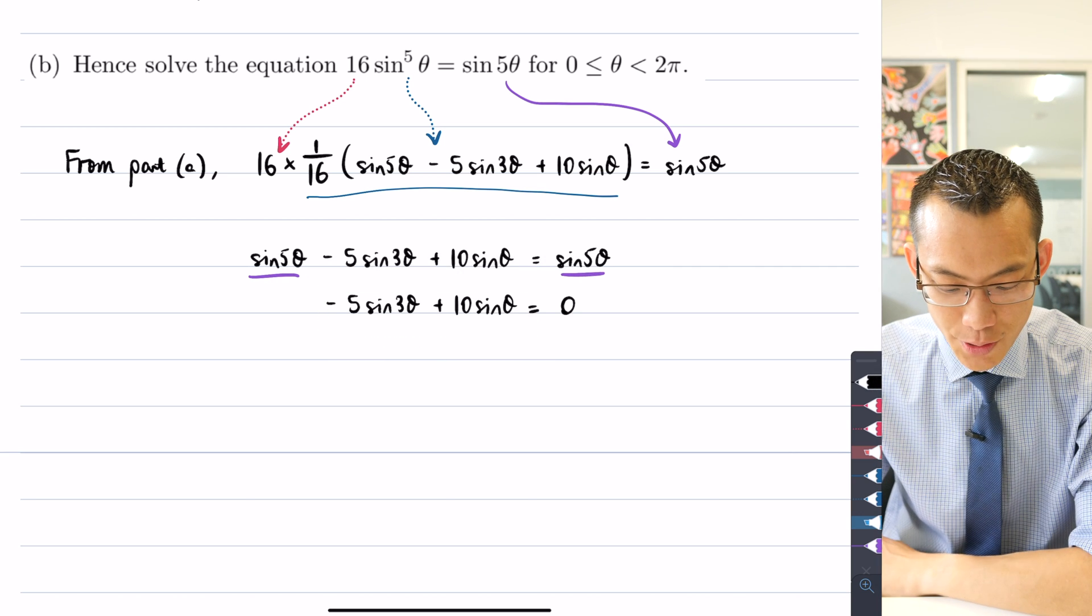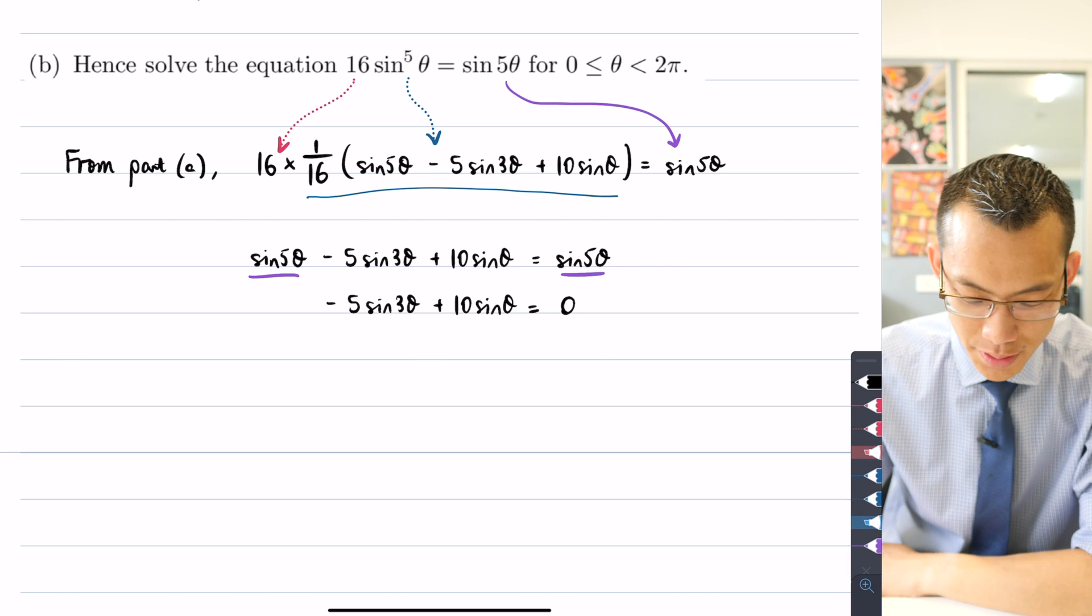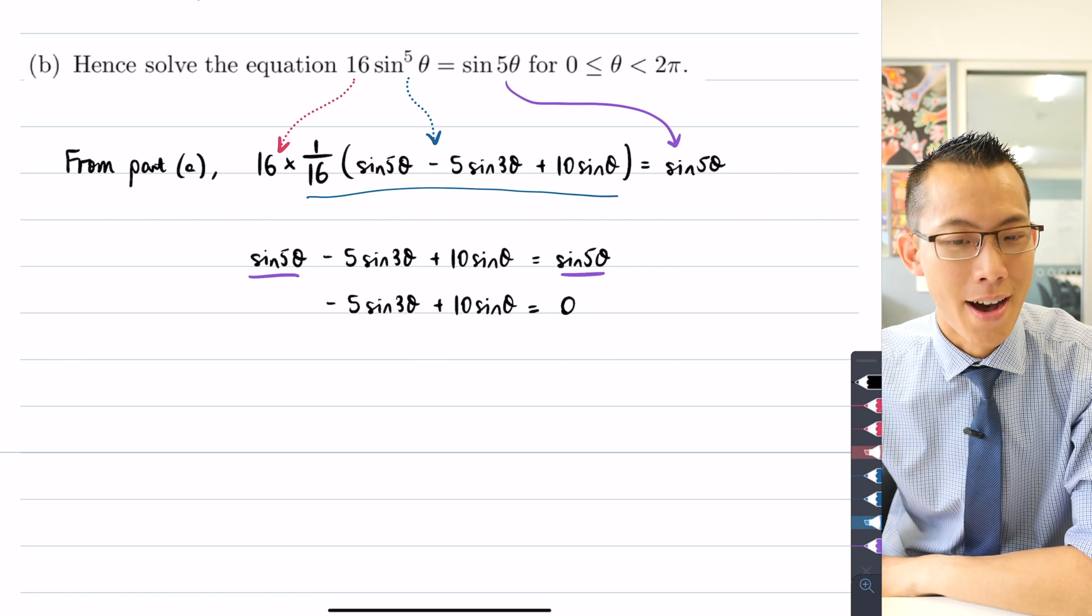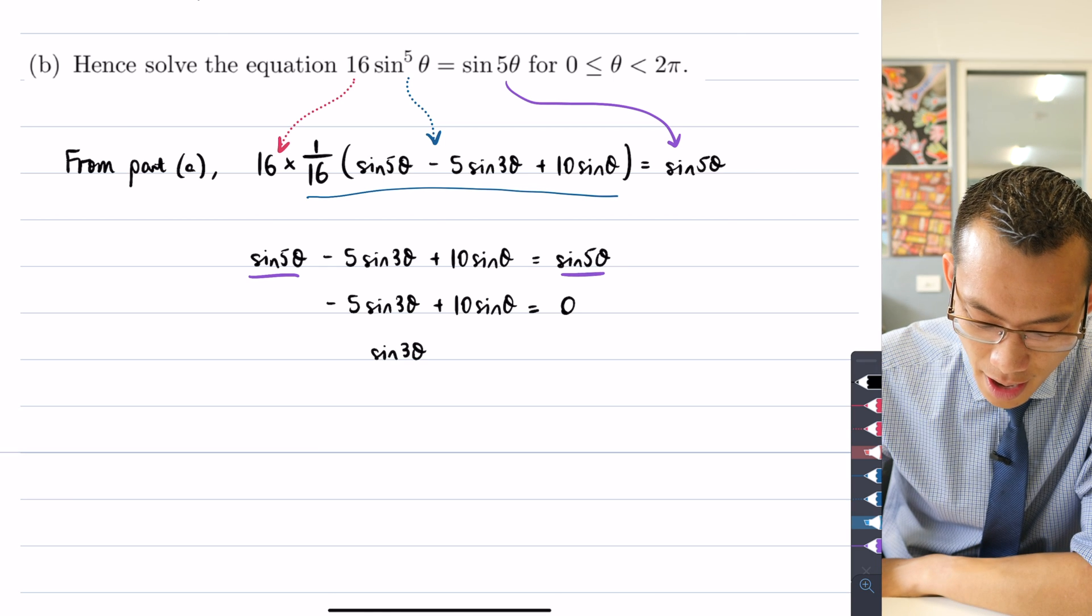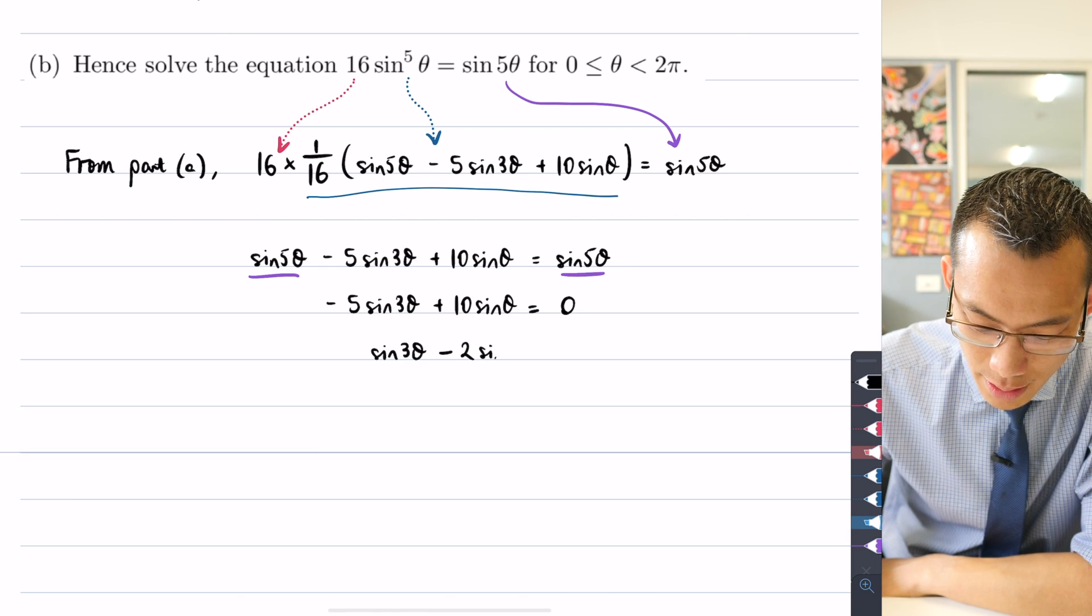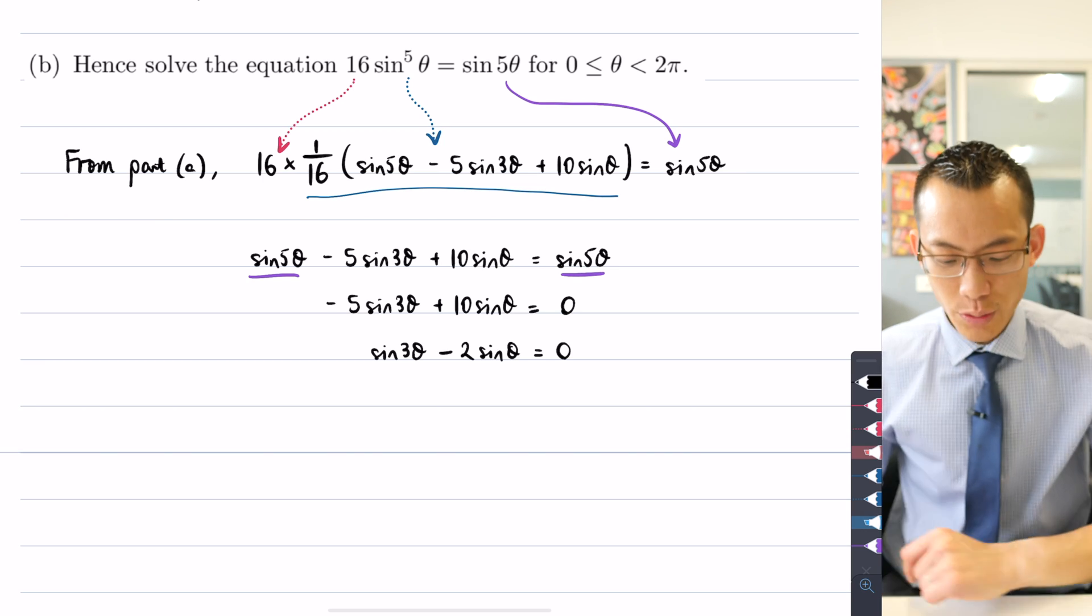So that leaves me with just this. This will equal, in fact, 0. I can go even further. I can divide both sides by 5. So that gives me sin 3θ out the front and then minus 2 sinθ in the back. That's all equal to 0.